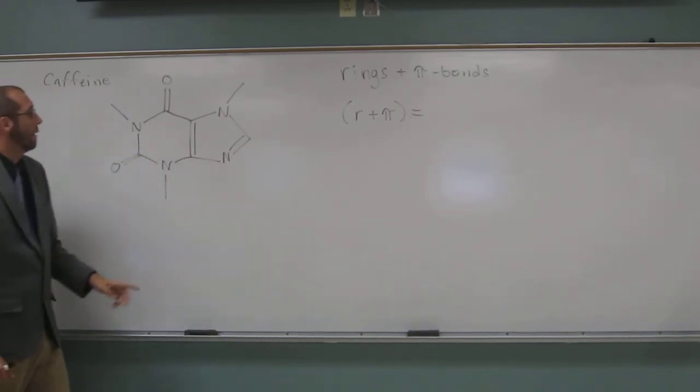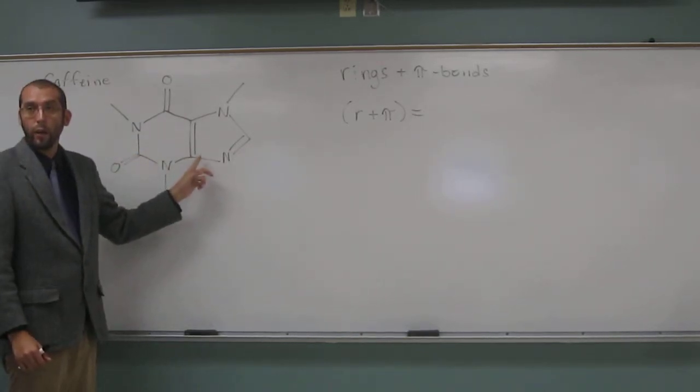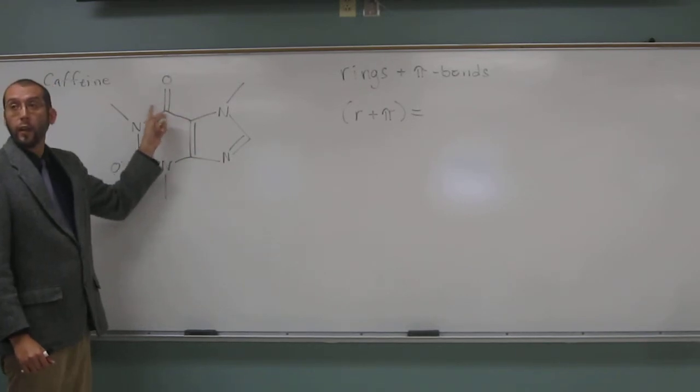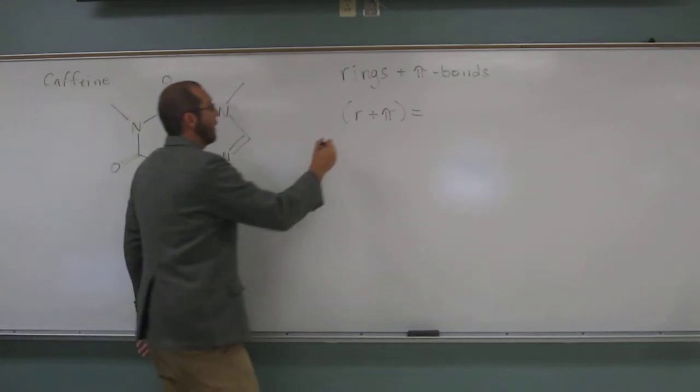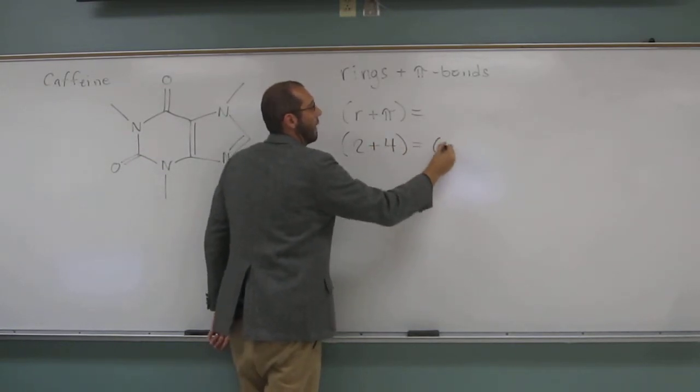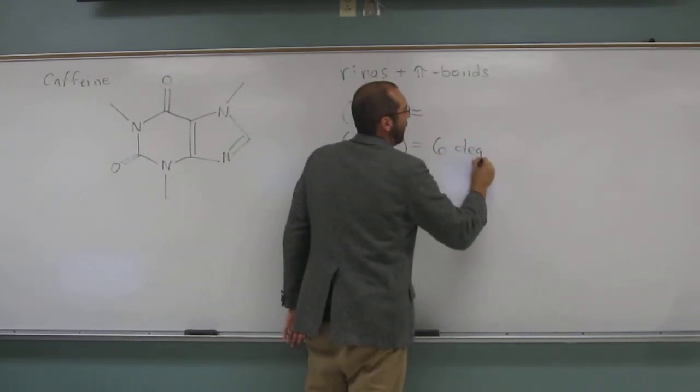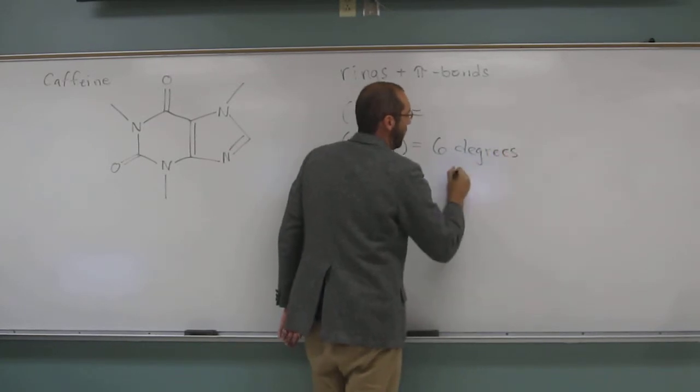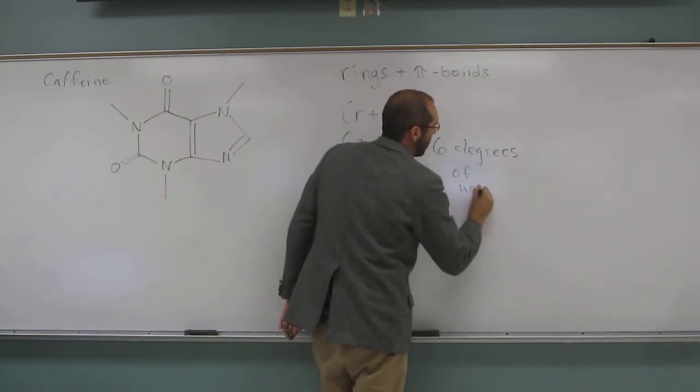And how many pi bonds? So do you see one, two, three, four. So we calculate the number of rings plus the number of pi bonds. That's going to get six degrees of unsaturation.